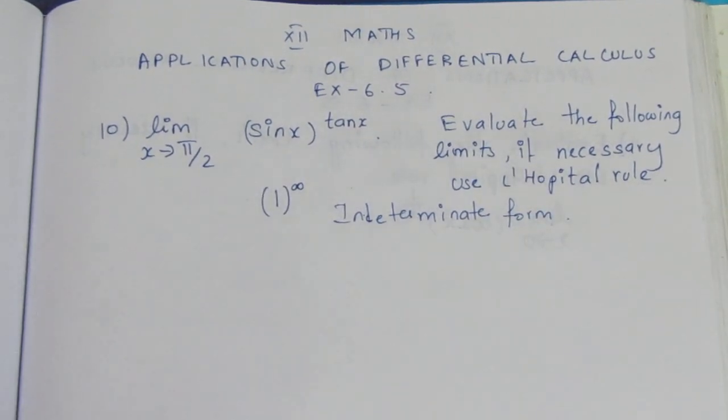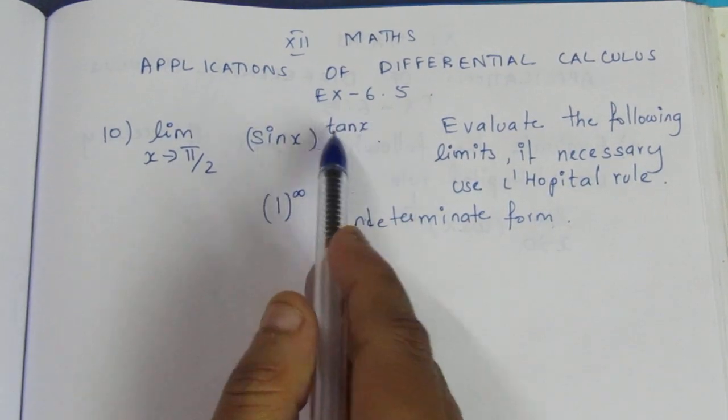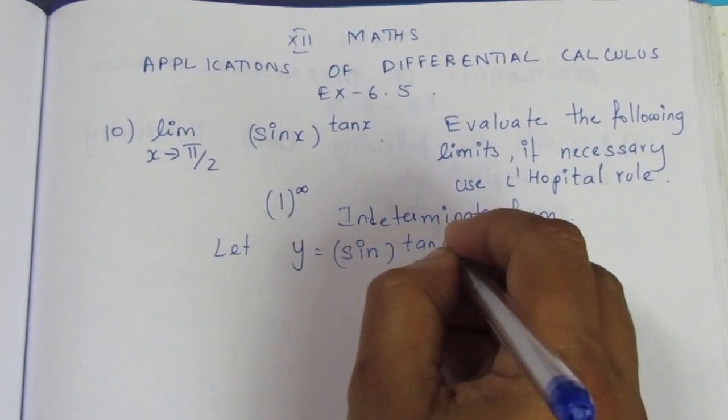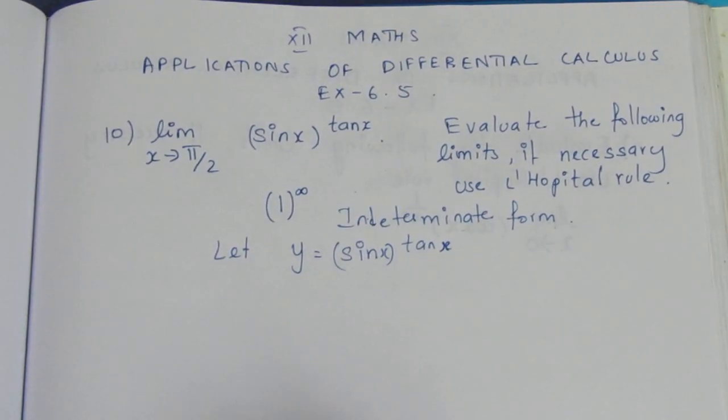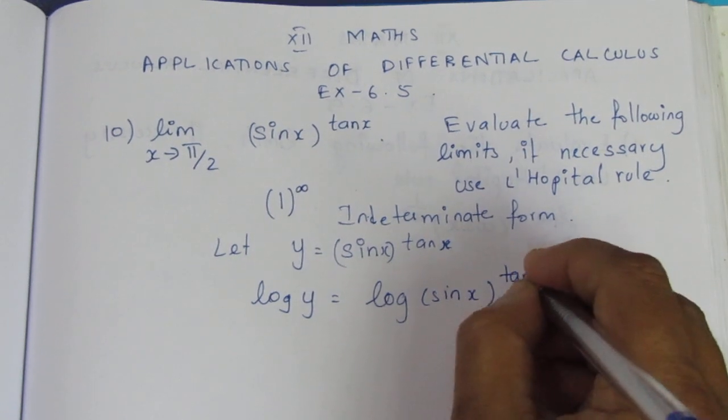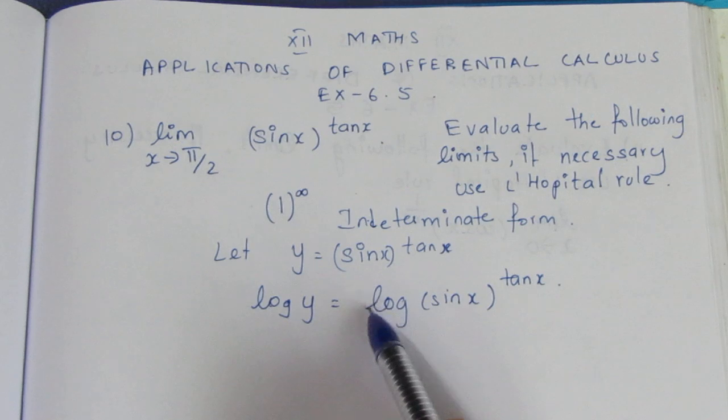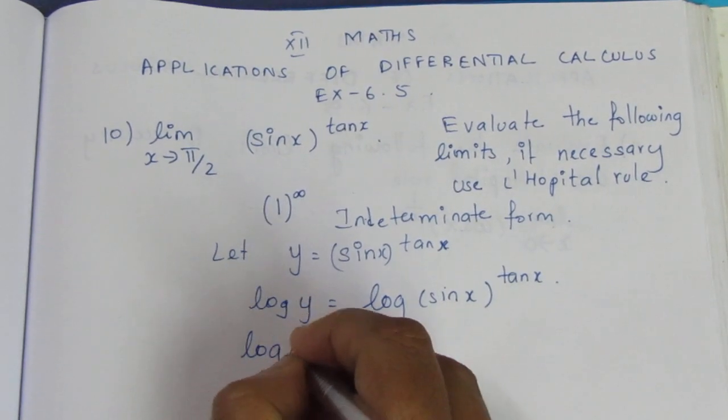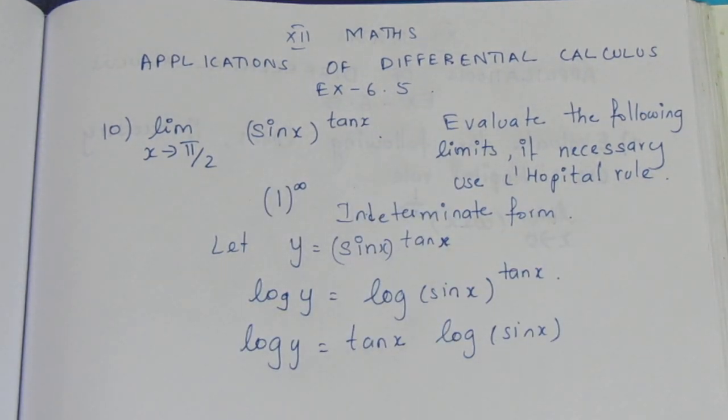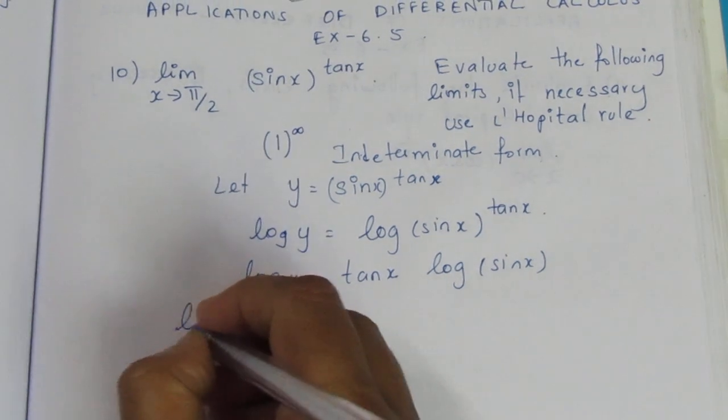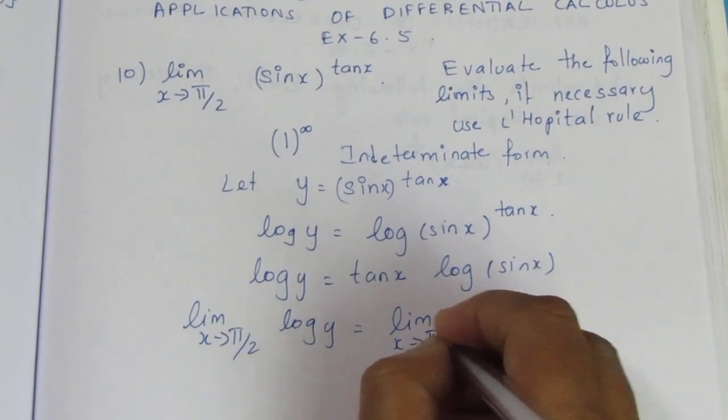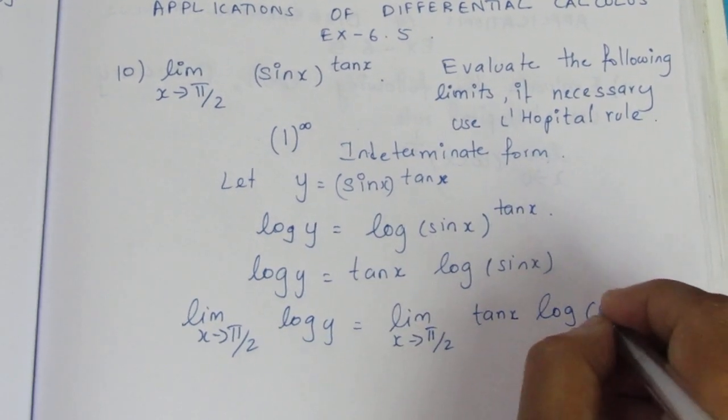What do we do to solve this? How do we use L'Hôpital's rule? Let y equals (sin x) to the power tan x. We take log. Log y equals log of (sin x) to the power tan x. Using the property log m to the power n equals n log m, we get log y equals tan x times log sin x.